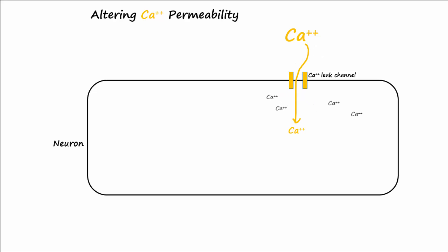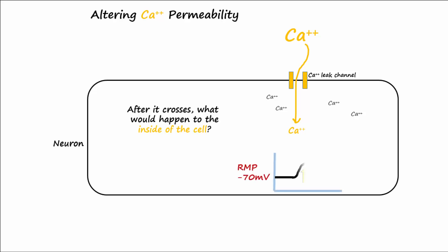Calcium ions are positive, so after they cross and come into the cell, the inside of the cell, or RMP, would become more positive — or you could say it becomes depolarized.